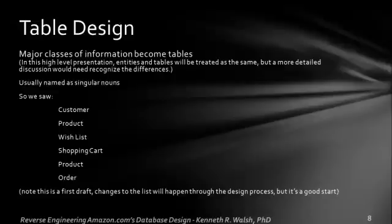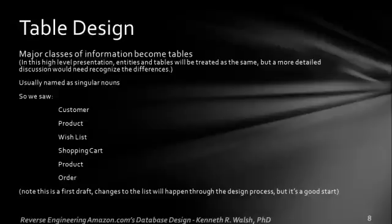The first thing we'll look at is table design. A database is a collection of tables, and the tables represent the major classes of information being stored. We usually name them with singular nouns, and from our look at Amazon, we saw that customer, product, wish list, shopping cart, and order are needed.